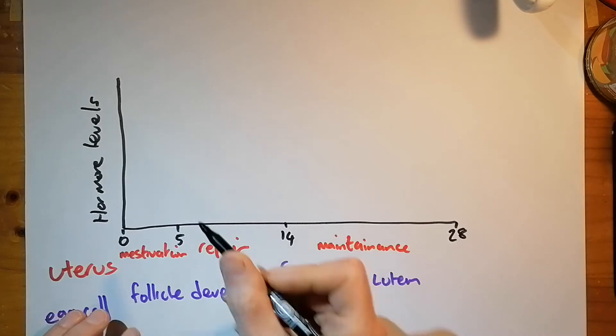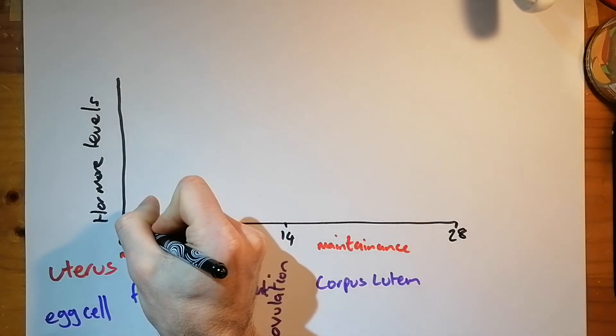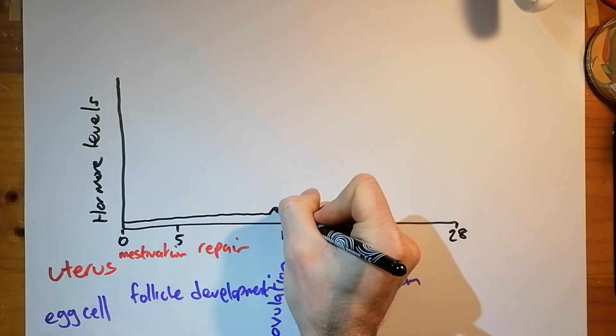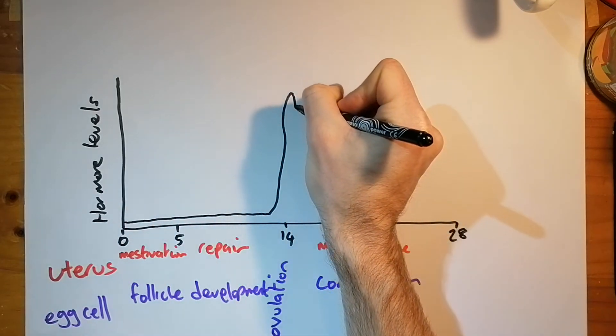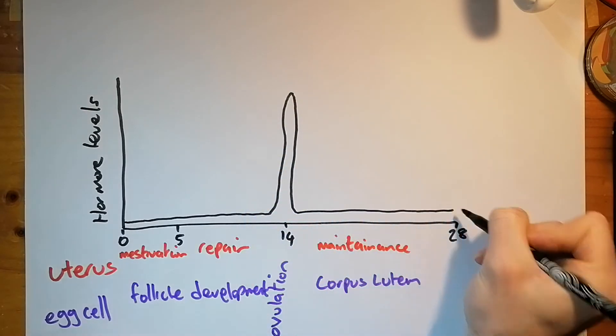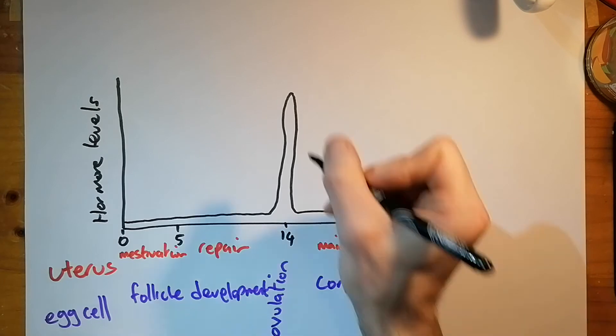The more straightforward one we'll do first. LH is called luteinizing hormone. And there's not much of it released, and then pretty much bang on ovulation, you get a spike of it. And then it goes back to normal again, and hardly any of it's released. So that's the LH curve.